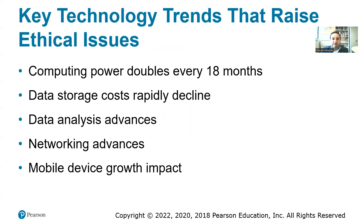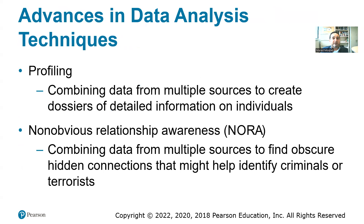Some trends that have raised ethical issues include Moore's Law, which states that computing power will double every 18 months while the price of storage declines. This has proven true — a small phone today can have as much power as a supercomputer from the 1960s. The processing and computing power has continued to grow enormously.